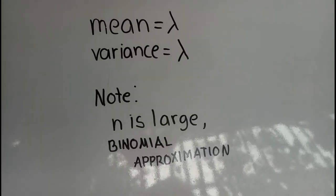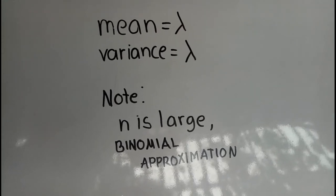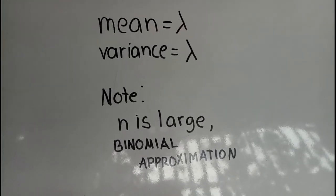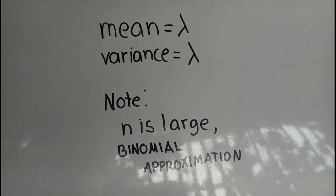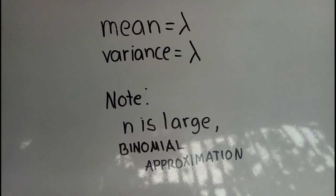In a Poisson distribution, the mean is equal to lambda and the variance is also equal to lambda. Therefore, mean is equal to variance. For an event like this example, supposing that on the average one person in every 1,000 is an alcoholic, find the probability that a random sample of 8,000 people will yield fewer than 7 alcoholics. In this problem, we can note that n is large, and therefore we can consider binomial approximation.